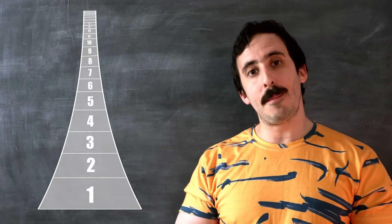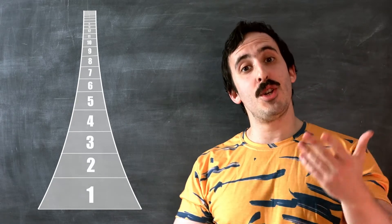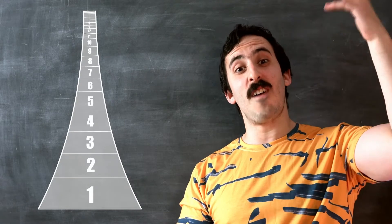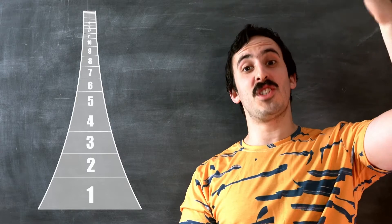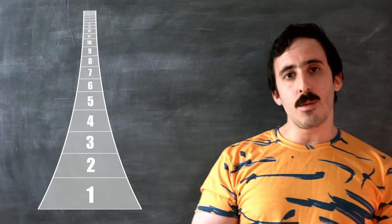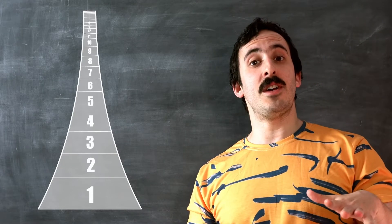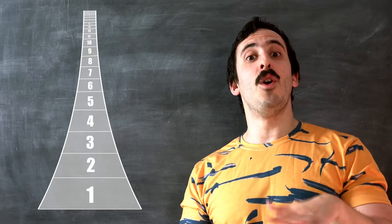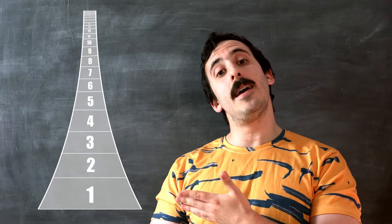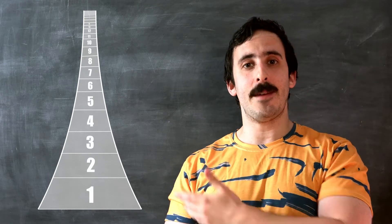The first room is labelled room number one, the second room number two, the third three, then four, then five and so on. And to start with, all the rooms in Hilbert's hotel are not occupied, and we represent that here by showing them as shaded in grey.